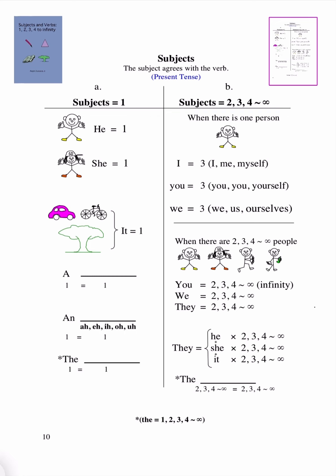We're going to talk about subjects, and this is coming from the book called Subjects and Verbs 1, 2, 3, 4 to Infinity, written by Ralph Duncans Jr. I am Ralph Duncans Jr.